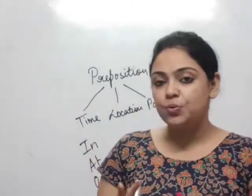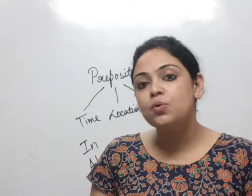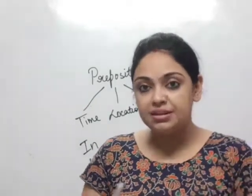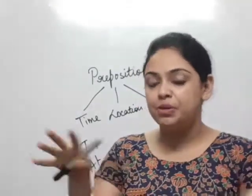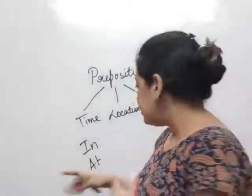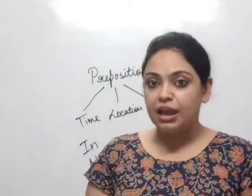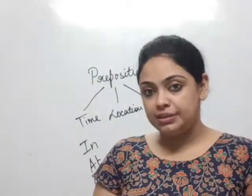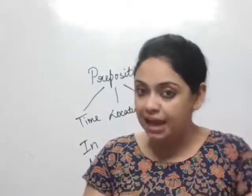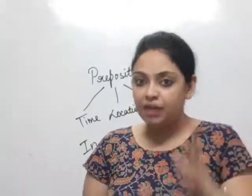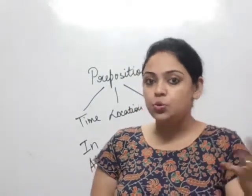"In" basically shows the position of a thing which is enclosed by edges, within the edges of something. It is surrounded by either people or maybe walls on four sides. "At" is very specific — it shows the location of a thing, particularly at a place or at a specific time. For example: at five, I am going to meet you outside the school gate.